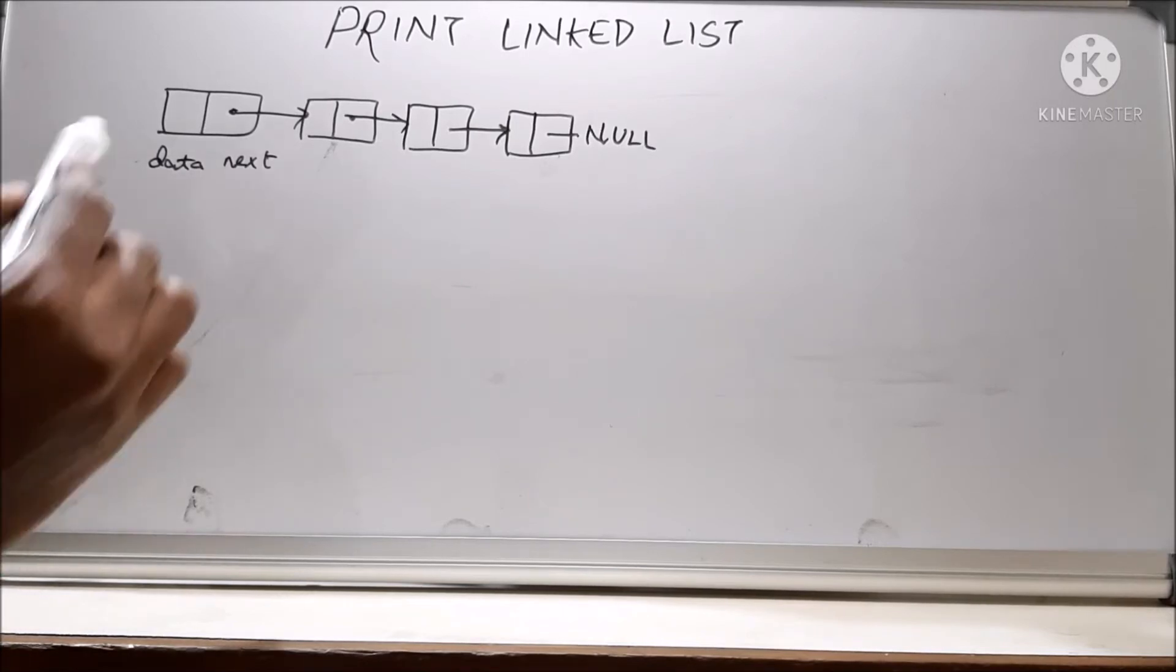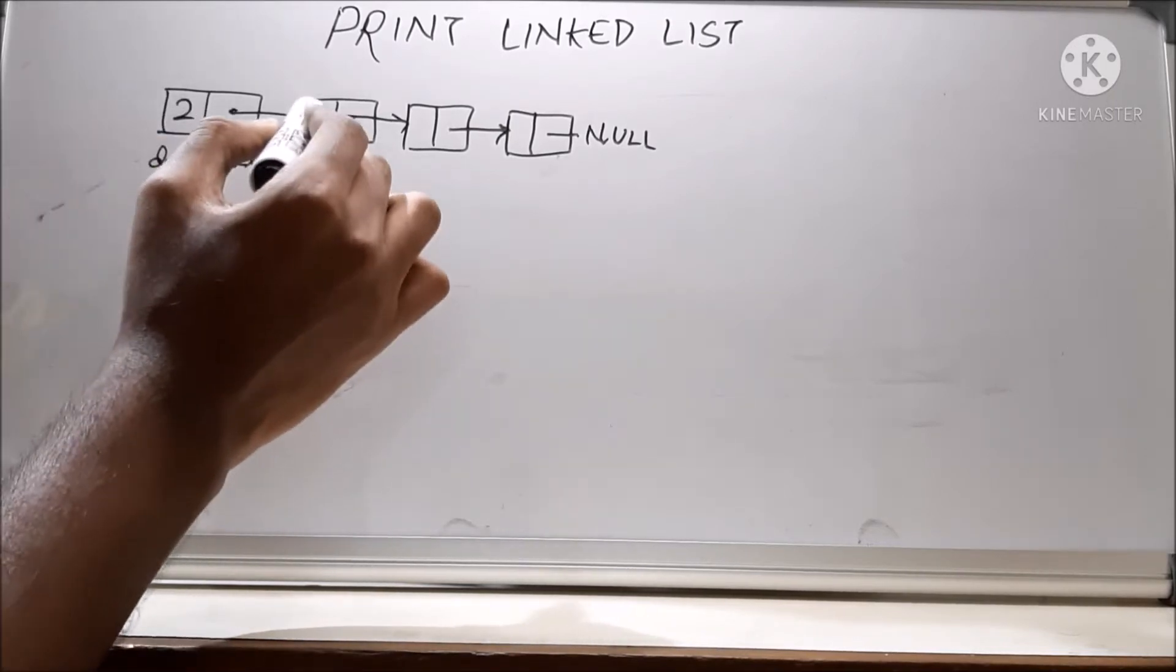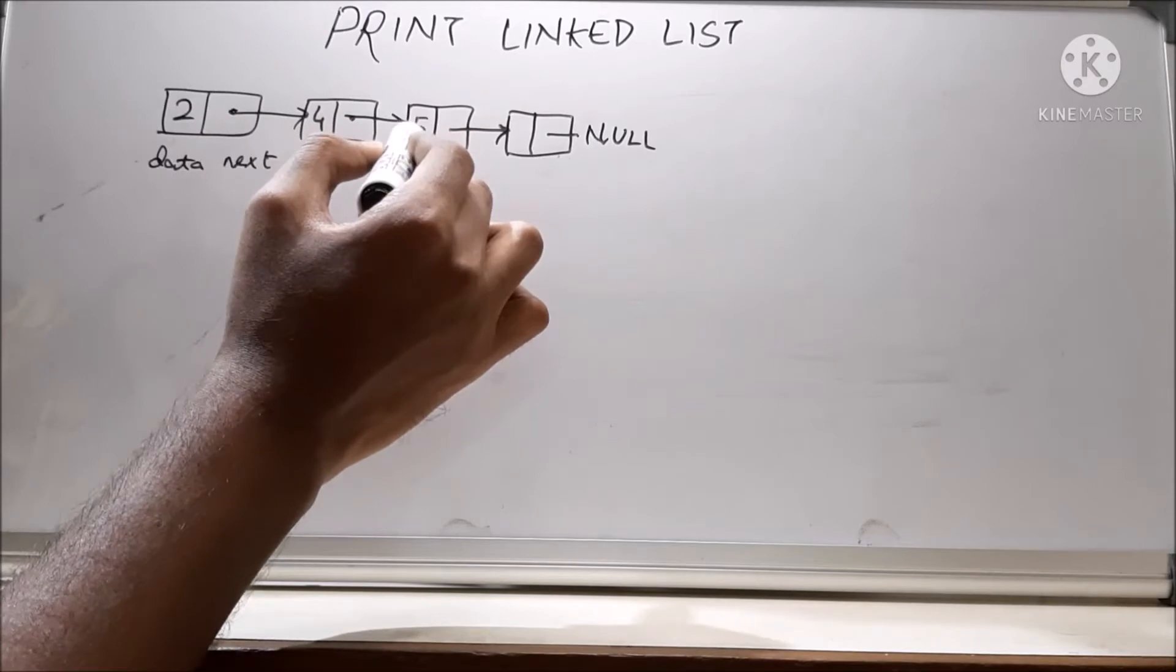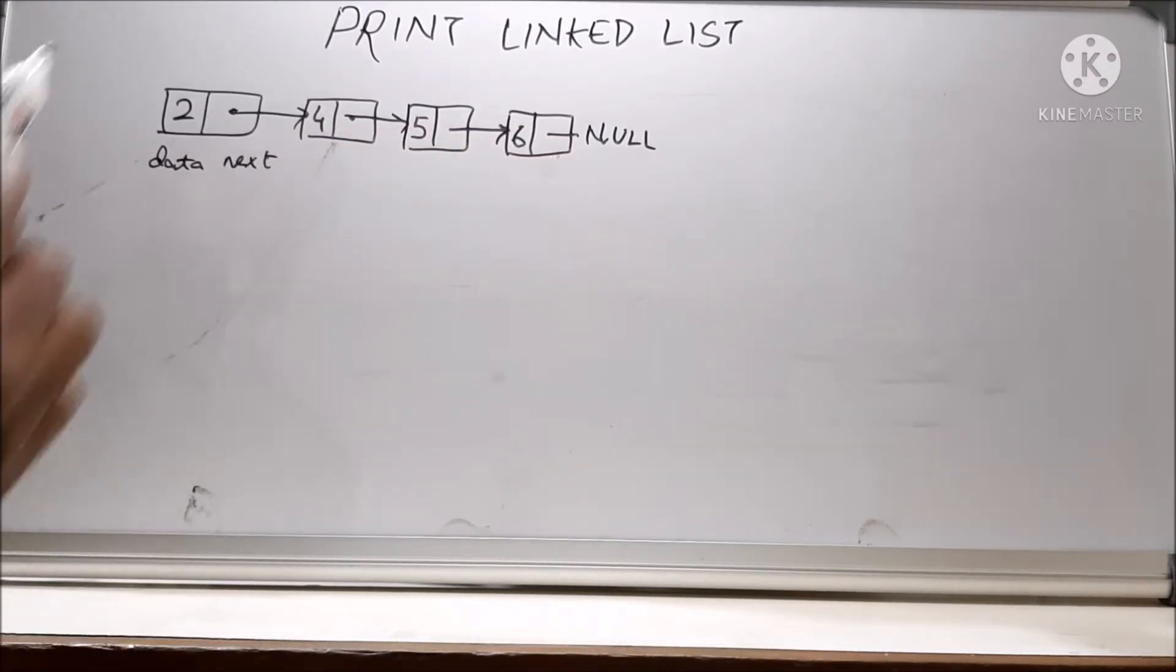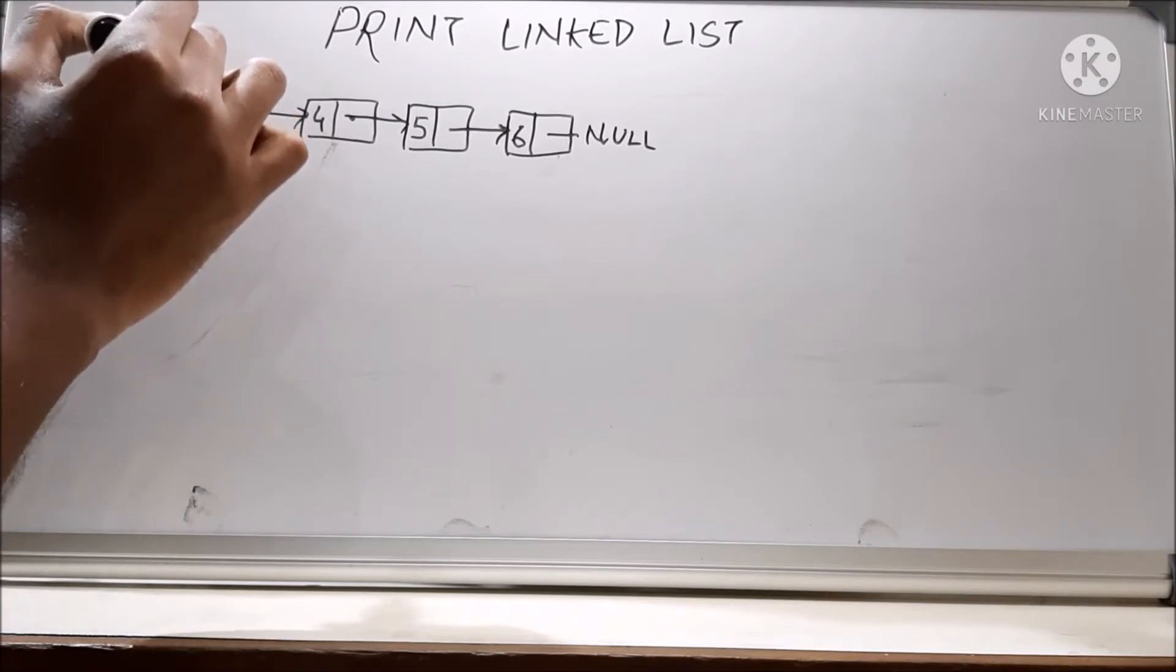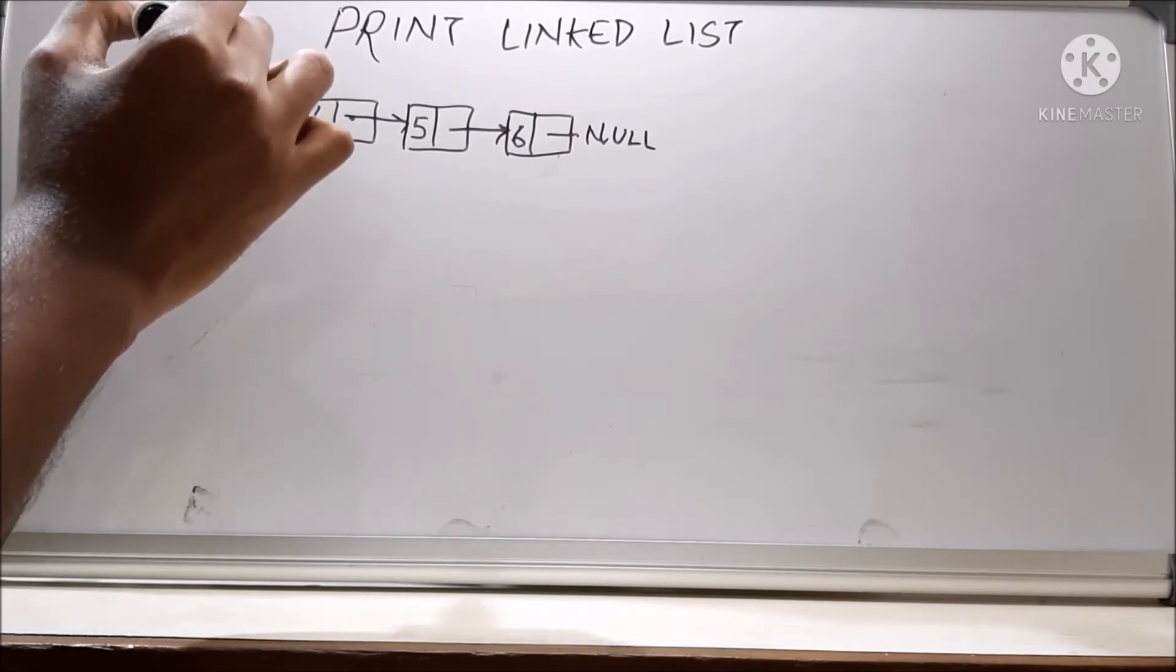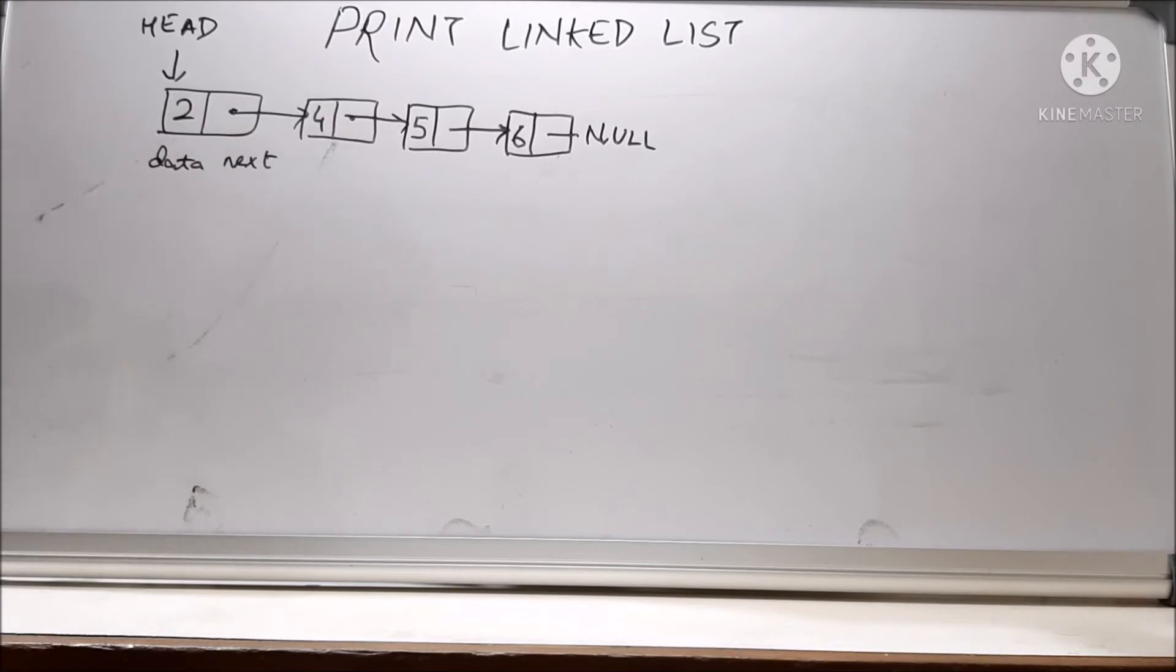So let's say we have a linked list which has some data, let's say 2, 4, 5, 6. And since it's the first node, it will be denoted by head. So this is the head node which is the beginning of the linked list.